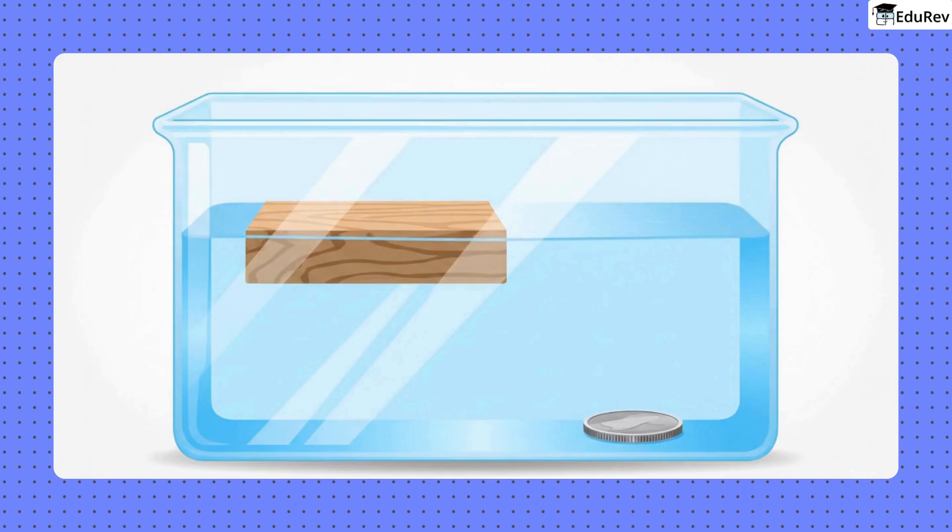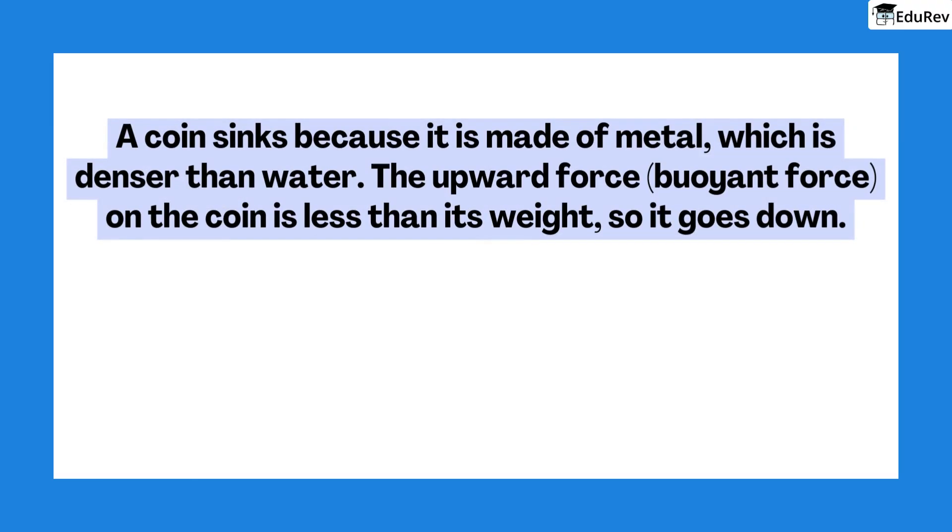Why does a coin sink but a wooden block float? A coin sinks because it is made of metal, which is denser than water. The upward force, buoyant force, on the coin is less than its weight, so it goes down.